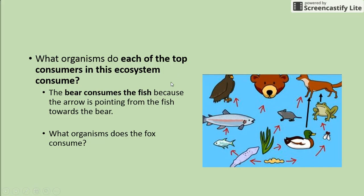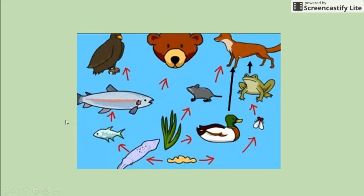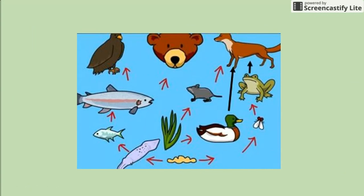Now let's talk about what happens when food webs get disrupted. What do you think would happen to the population of bears if the trout went extinct in the ecosystem? There are no more trout — so what would happen to the bear population? Go ahead and write what you think would happen.